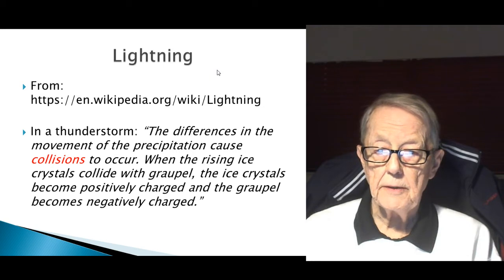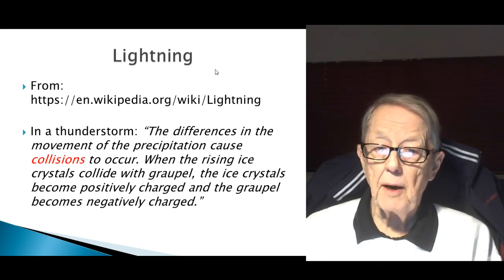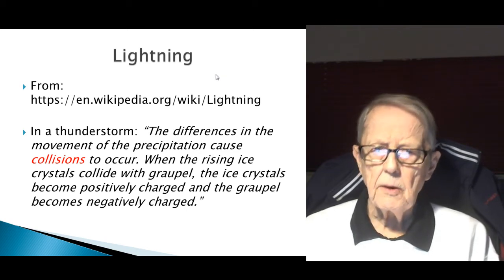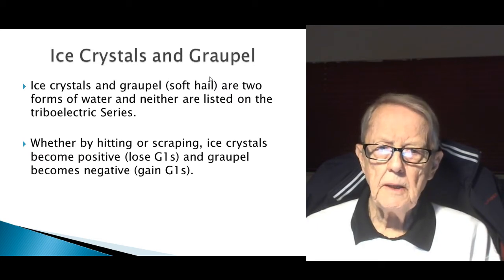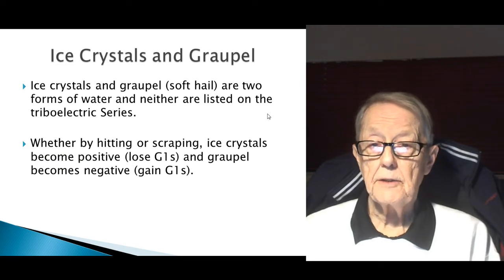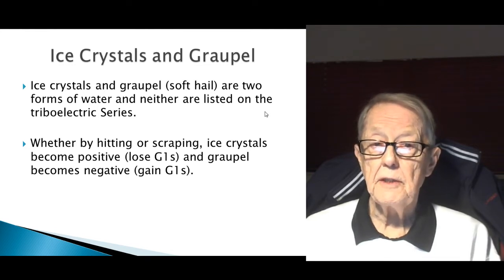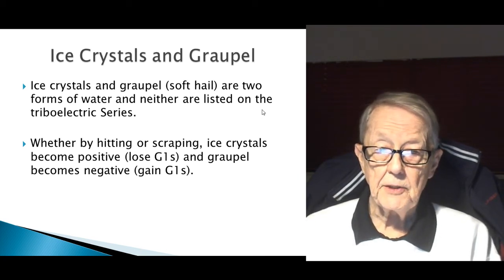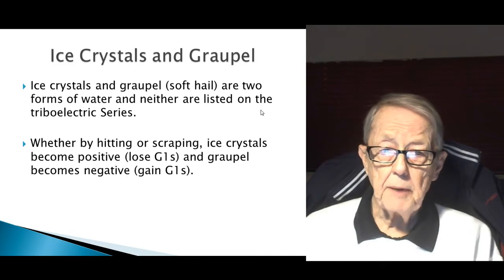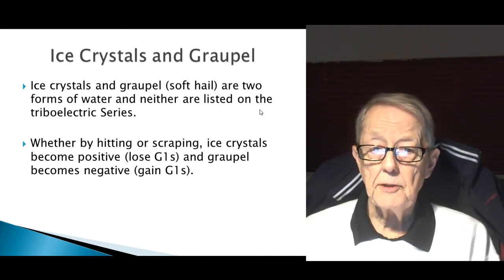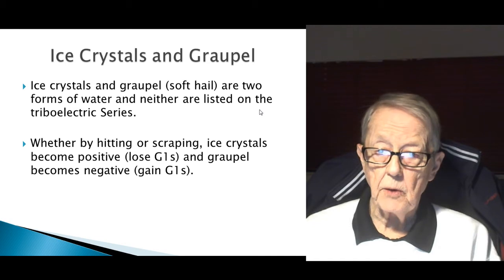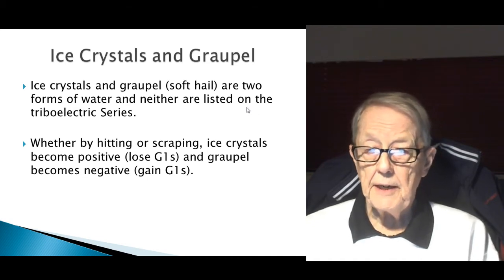What in the world is Graupel? Ice crystals and Graupel — Graupel is actually soft hail. Those are two forms of water, and neither of these are listed in the triboelectric series, just like Earth is not listed in that series. By hitting or scraping, ice crystals become positive — they lose G1s — and Graupel becomes negative — they gain G1s.